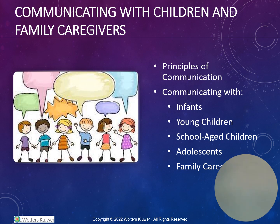When communicating with a school-aged child, begin by calming them down and connecting with them. Briefly acknowledge the family caregivers and include the child in the plan of care. Use simple, concrete responses to questions and be sensitive to the child's concerns. Play, reenactment, or artwork can give insight into how well the child understands a procedure or experience. Elicit their cooperation by offering reasonable and limited choices.